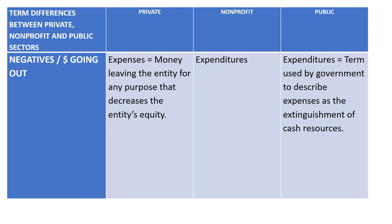When talking about costs going out: in the private sector it's expenses. Non-profit could be expenditures or expenses — it depends on whether it's American or Canadian, so you can use either term, and I won't be picky on an exam. In the public sector it's obviously expenditures.